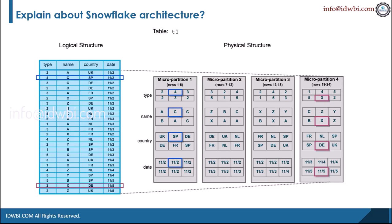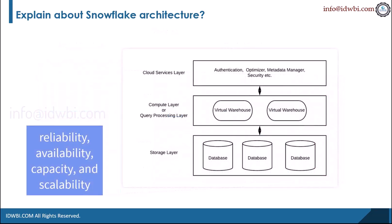Reliability means having that peace of mind that your data is available and you can read it at any time. Availability means that it is available all the time — there are no downtimes, no checking if the server is up or running. Capacity means you can store any number of millions of records within that system.